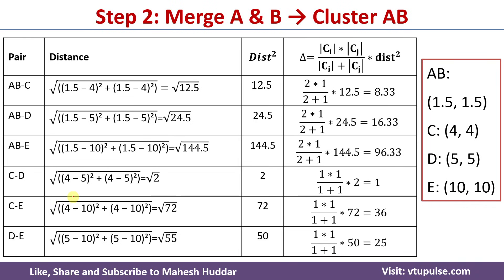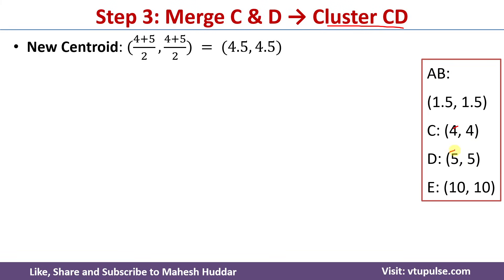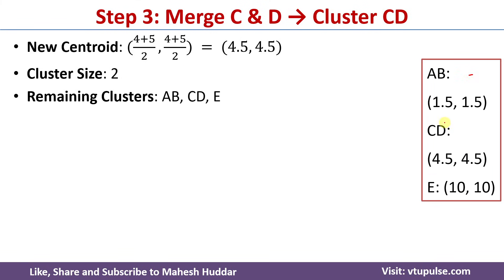Next we find the merging cost for the remaining pairs. The CD pair has the minimum merging cost of 1, so we merge these two to get the new cluster CD. The new centroid is (4+5)/2 and (4+5)/2, which equals (4.5, 4.5). This cluster contains two data points so the cluster size is 2, and the remaining clusters are AB, CD and E.